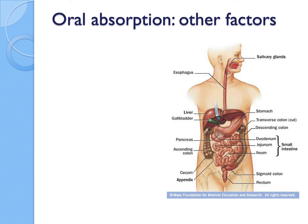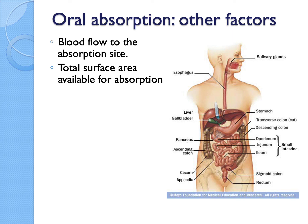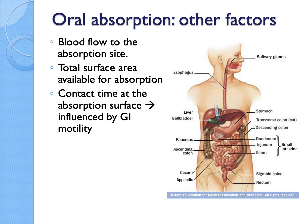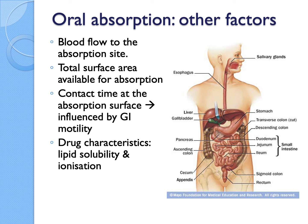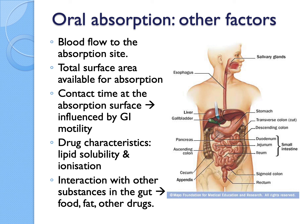Other factors that can influence the oral absorption process include blood flow to the absorption site, which can depend on food intake. Total surface area for absorption is fairly constant. Contact time depends on GI motility — a person with constipation will have a longer drug residence time compared to someone with diarrhea. Drug characteristics also matter, and there can be interactions with food in the gut. For example, calcium in milk can act as a chelator, forming a large insoluble molecule with certain drugs, preventing absorption because the resulting molecule is too large.